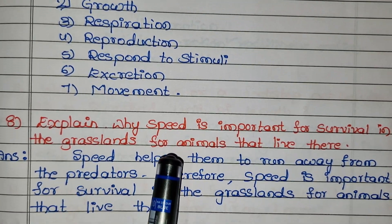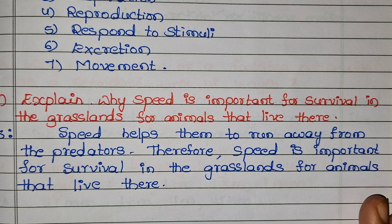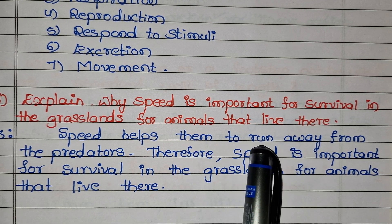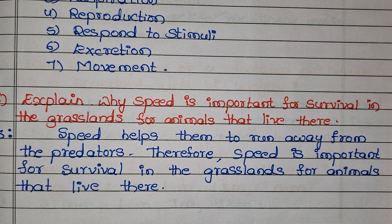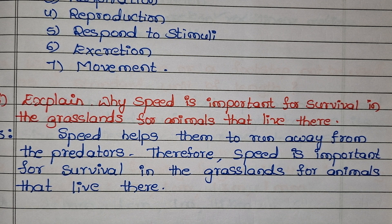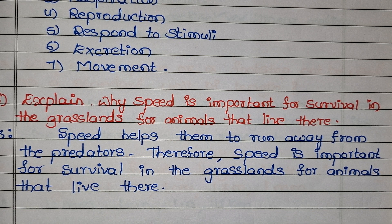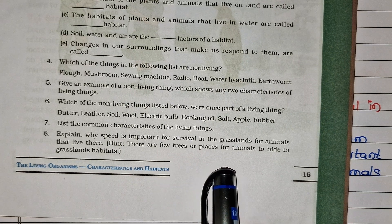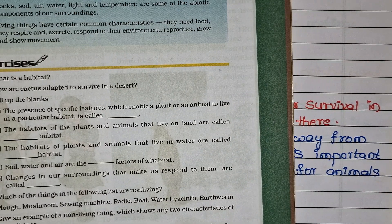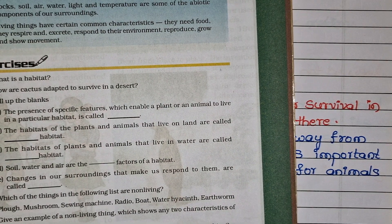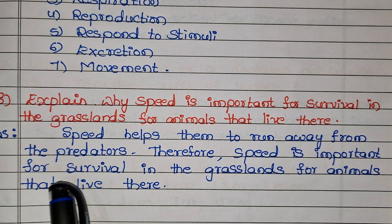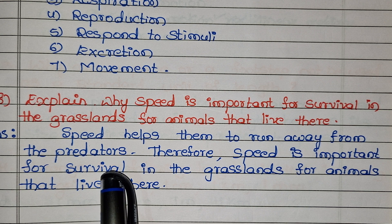The next question: explain why speed is important for the survival in the grasslands for the animals that live there. There are few trees or places for the animals to hide in grassland habitats. That's why speed helps them to run away from the predators.